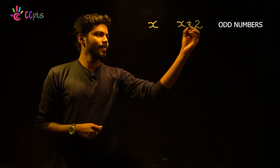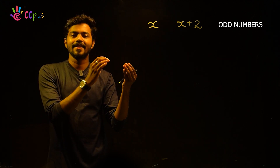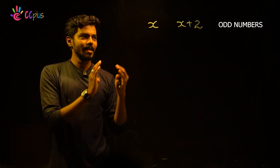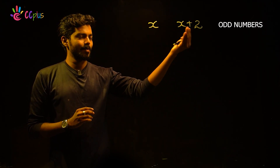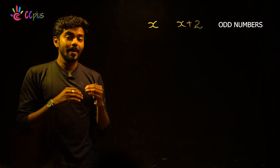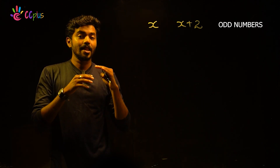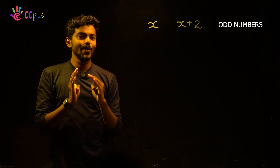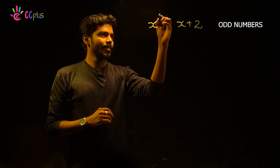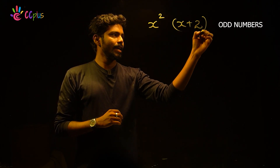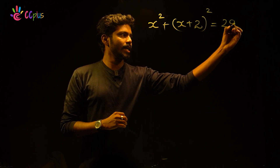So the two consecutive odd integers are x and x plus 2. Now what counts? In the square, the sum is 290. That is, x squared plus (x plus 2) the whole square equals 290.